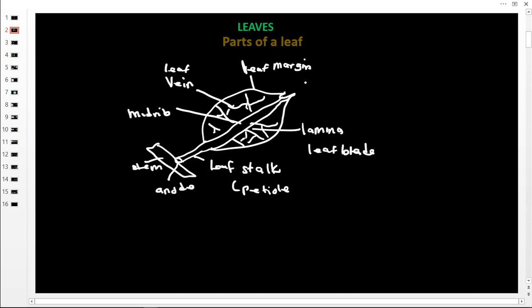When there is one it is a vein, and when there are many they are veins. The outline of the lamina is called the leaf margin. The sharp tip or ending is called the apex. So we have the apex, the margin, the lamina or leaf blade, the leaf stalk, and the midrib.